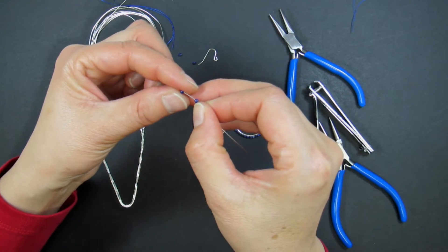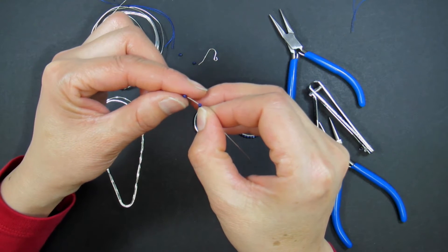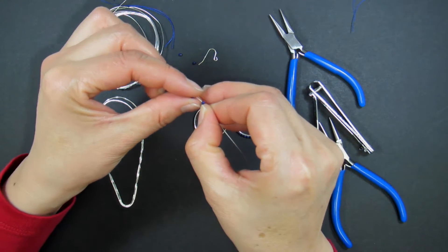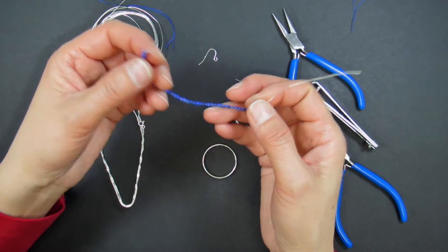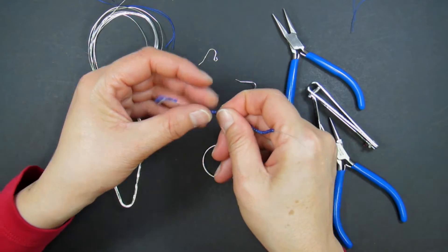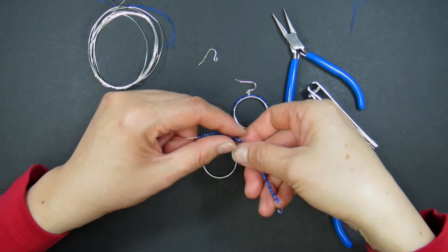Simply thread your chosen stones onto your 24 gauge sterling silver wire. We want the entire wheel to be covered, so as you are adding your stones, bring the beaded wire around the wheel to make sure you have enough.